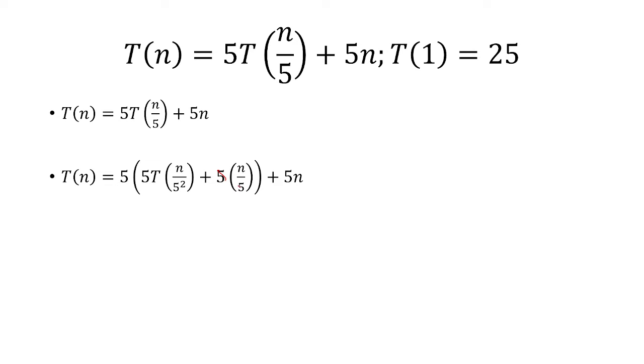Now the 5s here are going to cancel, but the 5 is going to multiply the n here. So that's 5n and then plus another 5n. So there's going to be two copies of 5n's, and then 5 times 5 here is 5 squared, and then we have times T of n over 5 squared.